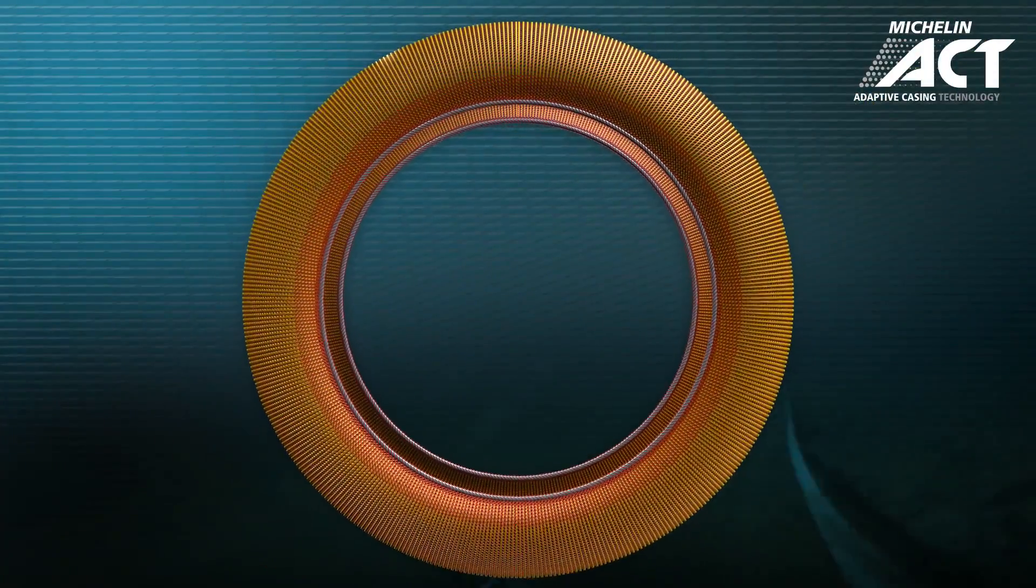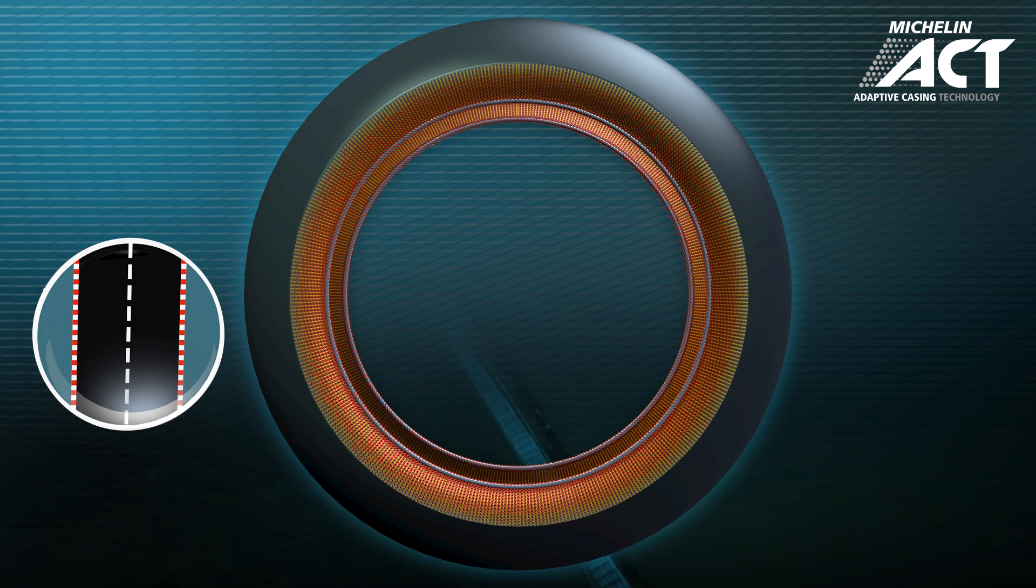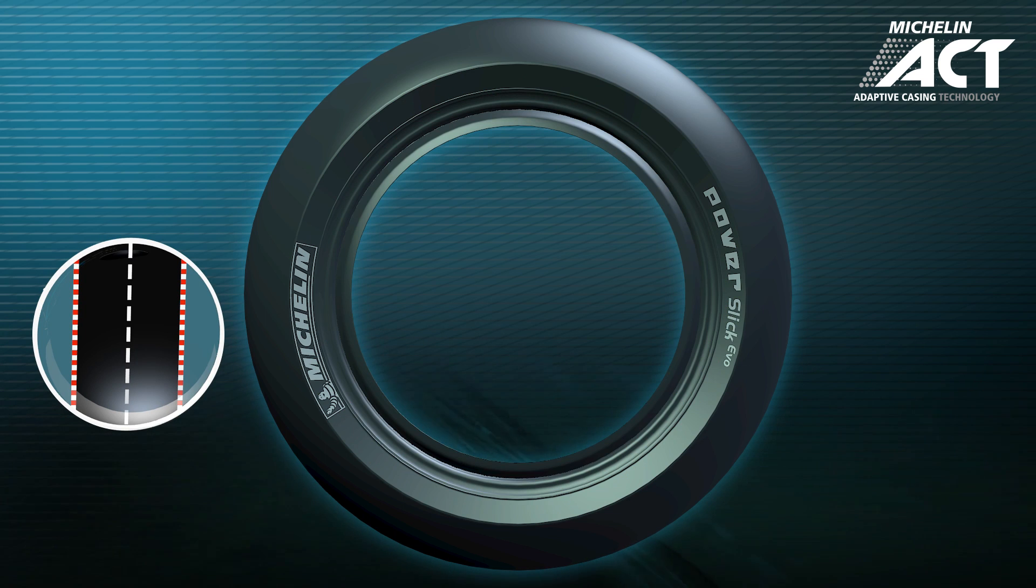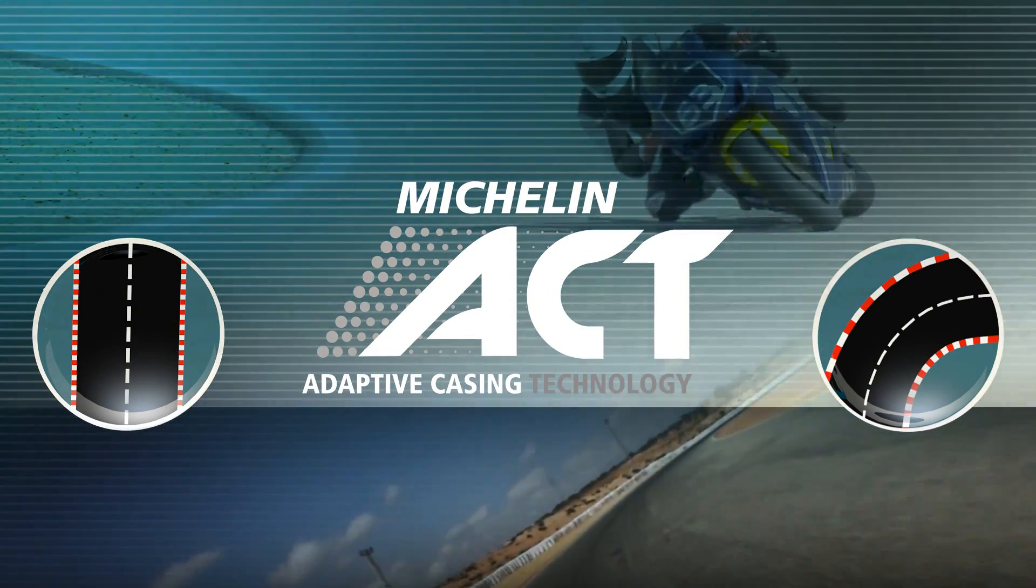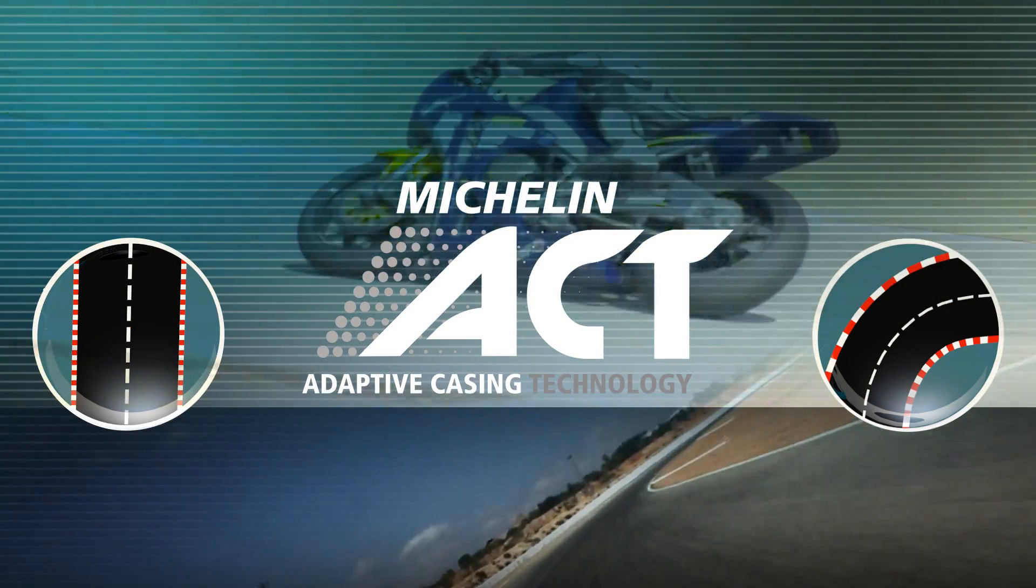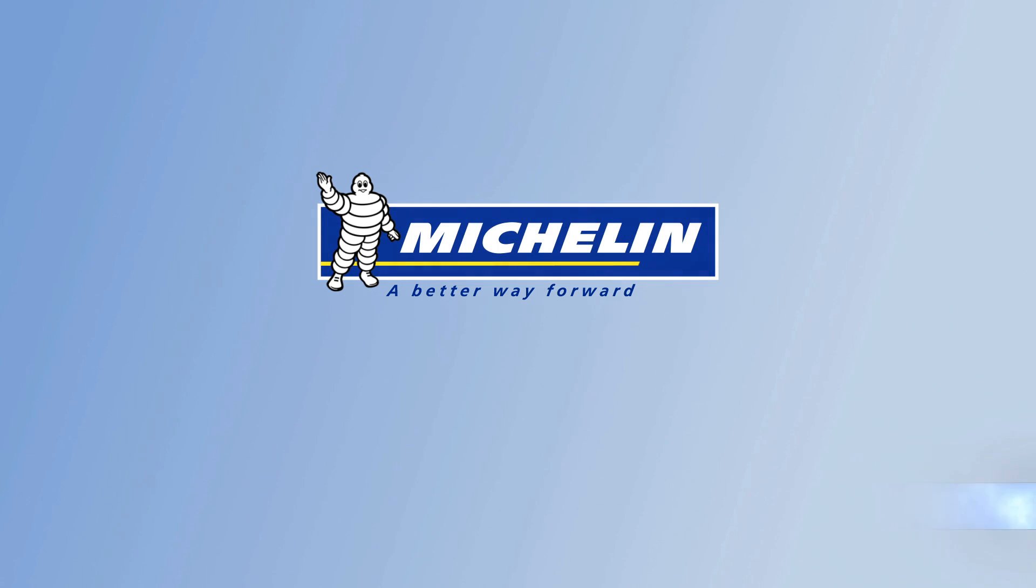Taking the tyre as a whole, the low rigidity crown serves to provide straight line stability at high speeds, while the more rigid sidewalls favour cornering stability. Thanks to Michelin ACT, each Michelin brings more performances together in all its tyres. Michelin, a better way forward.